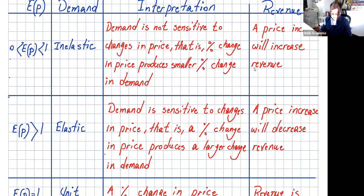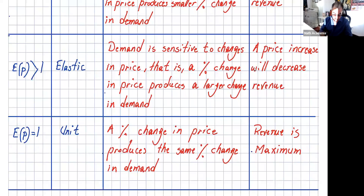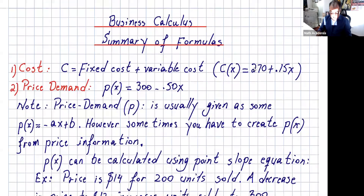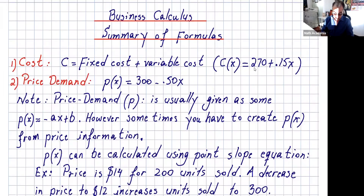Summary: if E(p) is between zero and one, increase the price to increase revenue. If E(p) is greater than one, don't touch or decrease the price. When E(p) equals one, demand is unit elastic — a percent change in price produces the same percent change in demand — and that's when revenue is maximum. To find the price that maximizes revenue, set E(p) = 1 and solve for p.